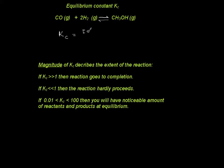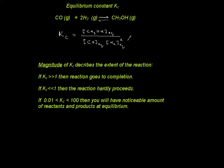The equilibrium constant is a constant at a given temperature. Products form the numerator, raised to their coefficient — in this case it's 1, so we don't write it — and the concentration is at equilibrium. Divided by the reactants: carbon monoxide at equilibrium times hydrogen at equilibrium raised to power 2. This is Kc — the expression you should be able to write: products over reactants, raised to their respective coefficients.